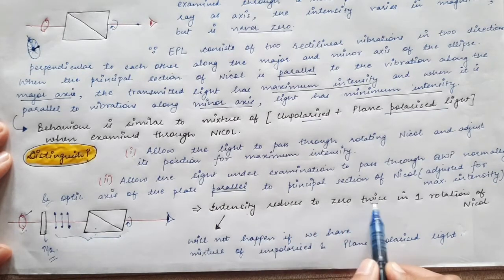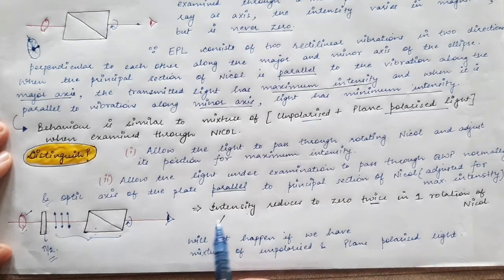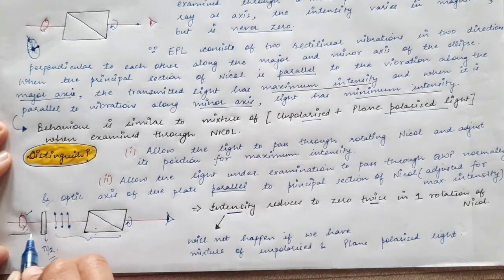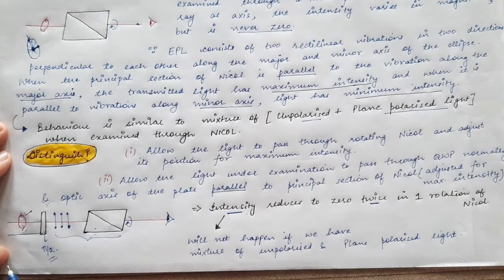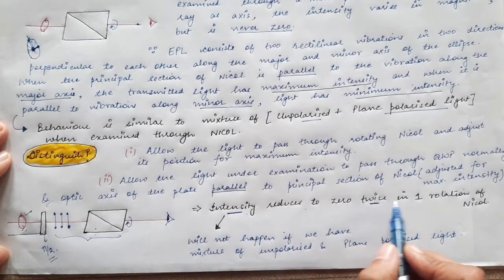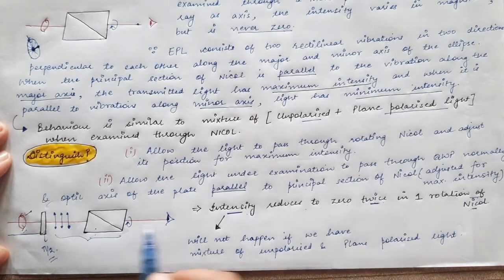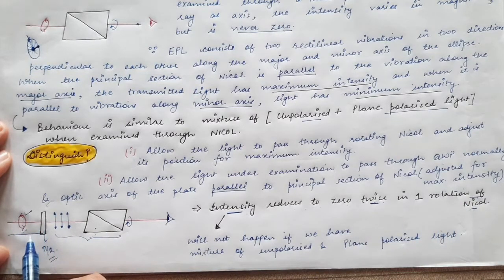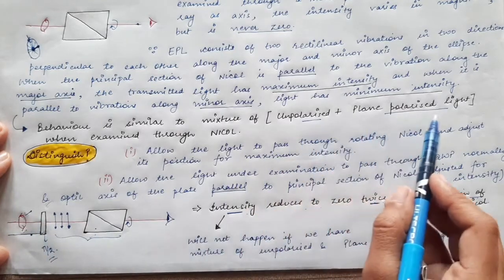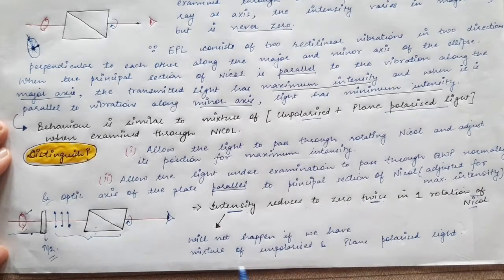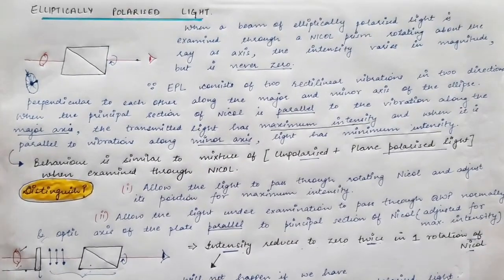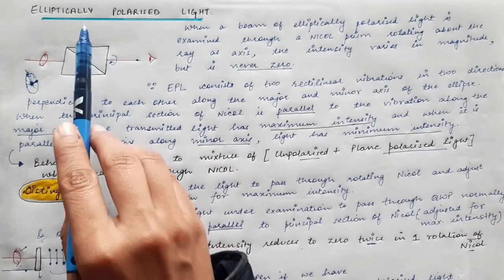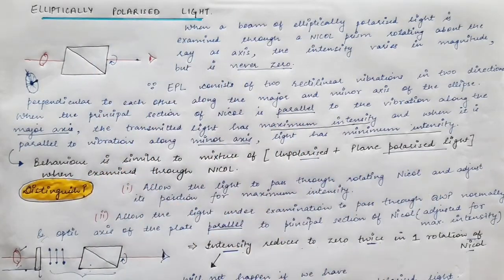So intensity reduces to zero twice in one rotation of the Nicol. This will not happen if the incoming light is a mixture of unpolarized and plane polarized light, because unpolarized light is not affected by the quarter wave plate and will remain unpolarized. Intensity reducing to zero twice in one rotation occurs only if the light is elliptically polarized. This is how we can detect elliptically polarized light and distinguish it from a mixture of unpolarized and plane polarized light.